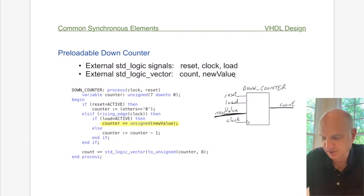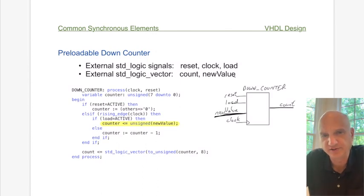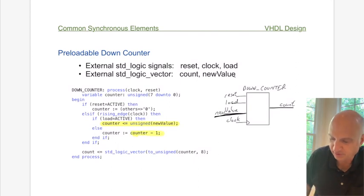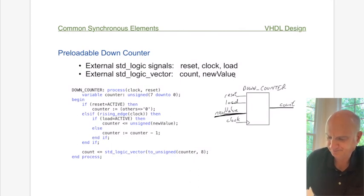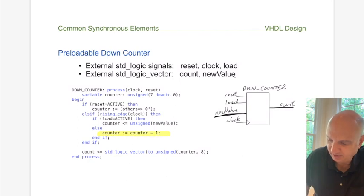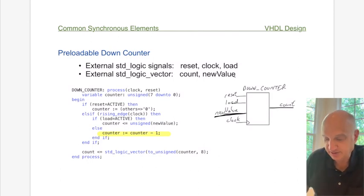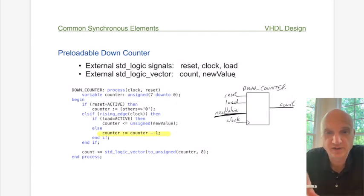The first thing on a rising edge is we check if the load signal is active. If so, we assign the new_value to the internal counter — but notice we have to convert new_value, which is a standard logic vector, into an unsigned value, because that's what the counter is. The reason we declared the counter as unsigned is so we can use arithmetic operations like 'counter minus 1' — those functions have been overloaded for this type.